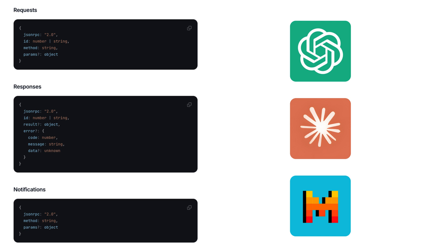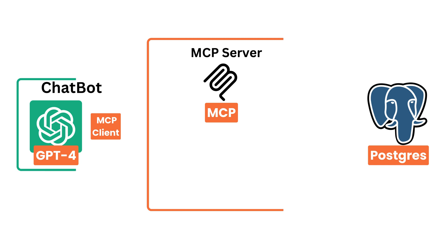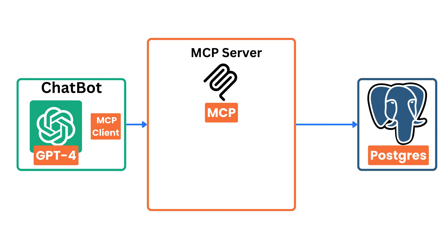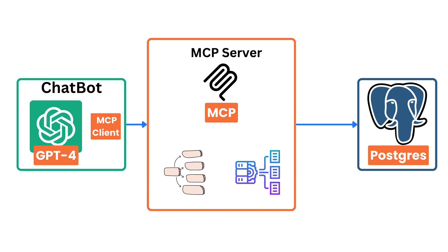That's the real value of MCP: governance and standardization at scale. But here's where things get tricky again. Even in that enterprise scenario, you still have to write your own mapping logic. Even with MCP, you still have to define what data to fetch, how to transform it, and how to structure it before sending it to the AI model. So if I am already doing all that work, what is MCP actually saving me? It feels like we are just moving the complexity elsewhere.